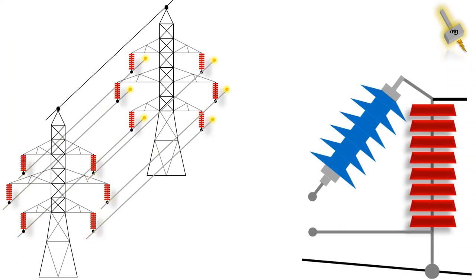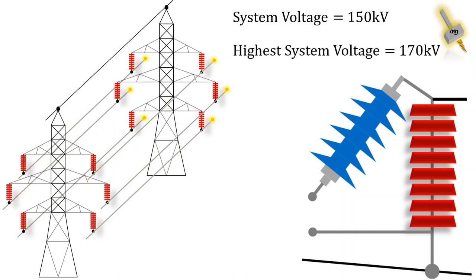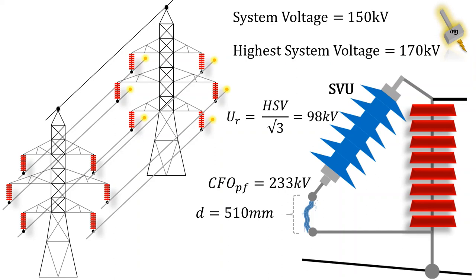Now let's see an example. Let's take system voltage of 150 kV. It will have highest system voltage of 170 kV. So the rated voltage of the SVU will be 98 kV. The critical flashover voltage at power frequency level will be 233 kV. For that, the minimum spark gap distance will be 510 mm.